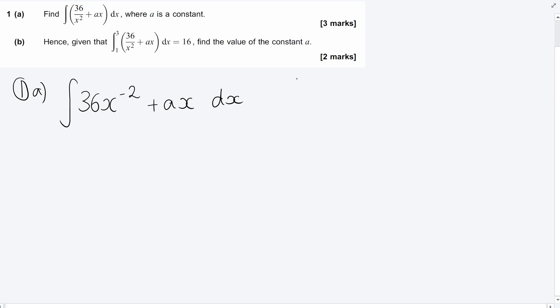So when we're integrating, we are adding one onto the power and dividing by the new power. So adding one onto the power there is going to be minus two plus one, which is minus one, and dividing by the new power.